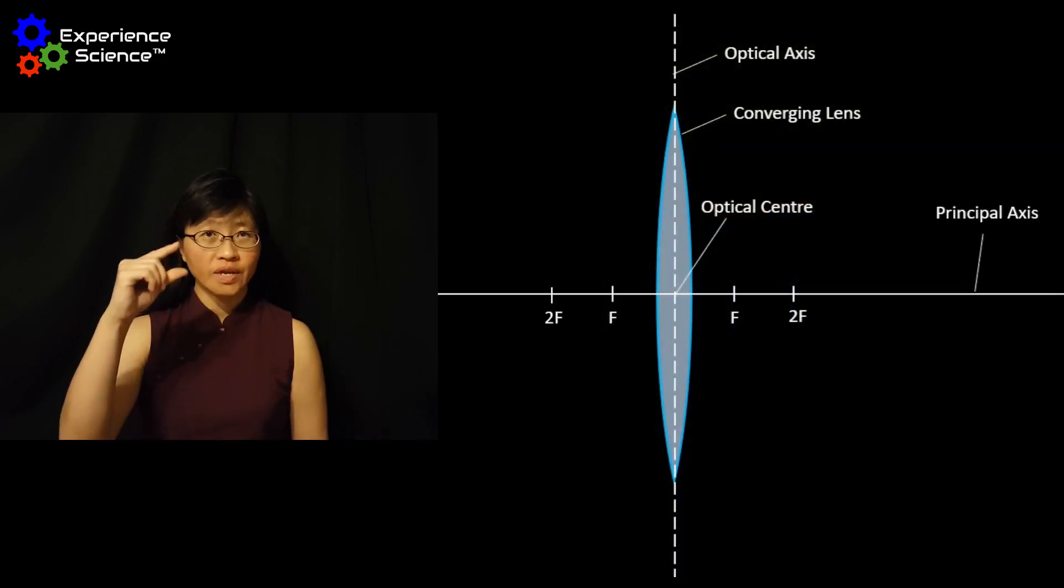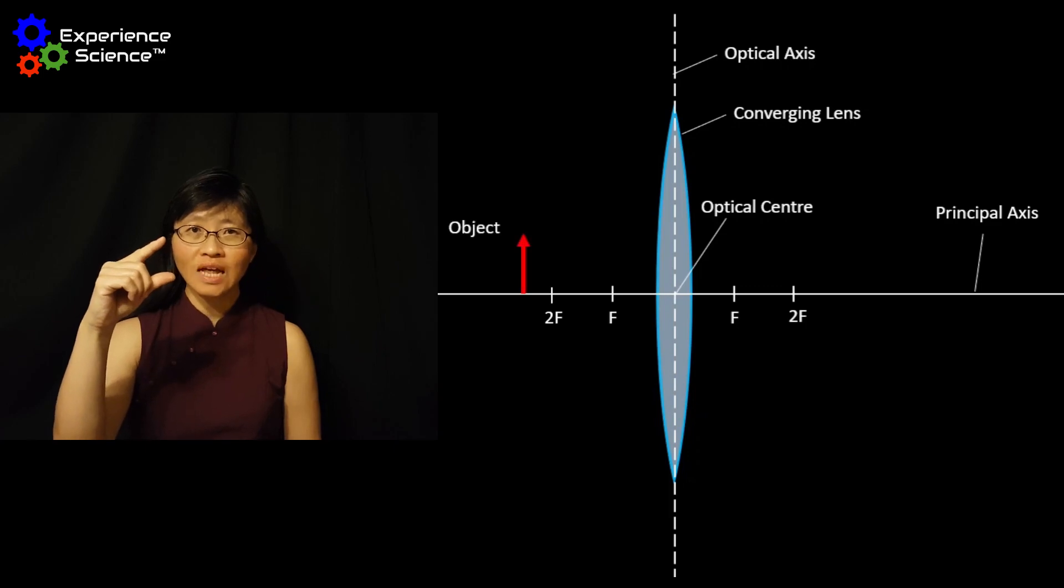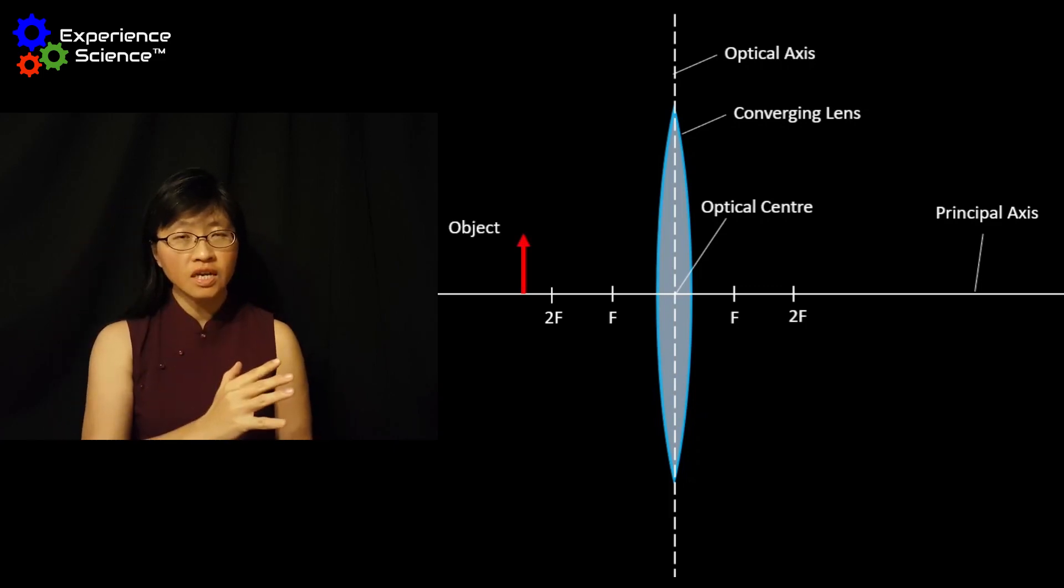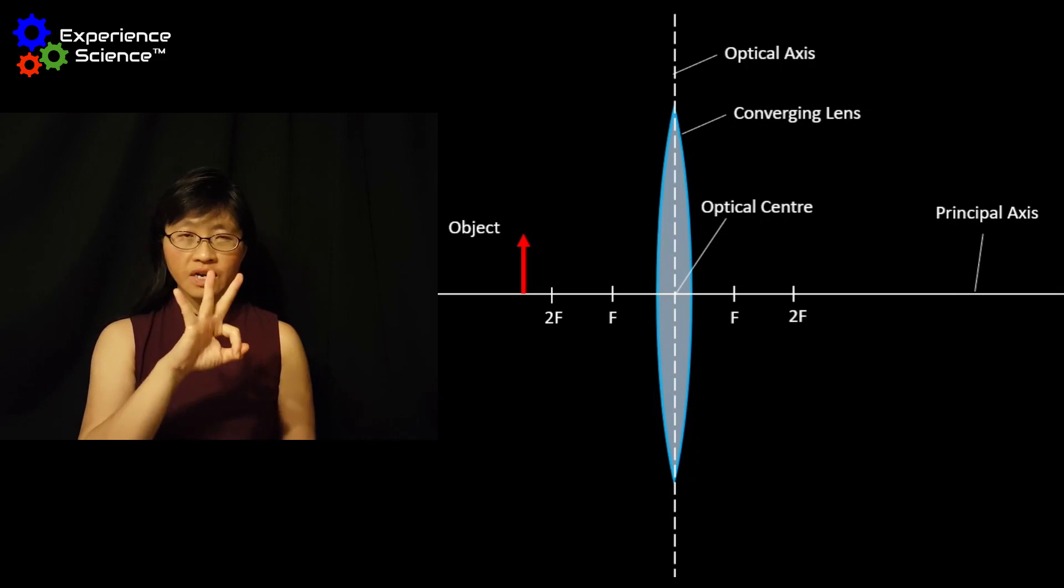When we draw ray diagrams for a point source of light that is passing through a converging lens, we will draw three rays.